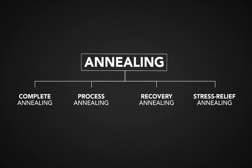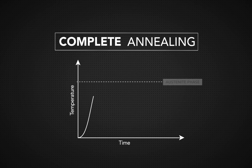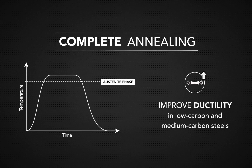The four most common types of annealing are: the full annealing process raises a metal's temperature past the austenite phase and then cools it slowly. It's used to achieve greater ductility in low carbon and medium carbon steels.